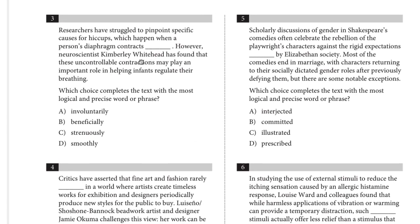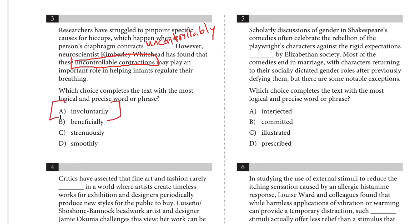Number three: researchers have struggled to pinpoint specific causes for hiccups, which happen when a person's diaphragm contracts in a certain way. However, this neuroscientist found that these uncontrollable contractions — and that's all we need. The muscle contracts uncontrollably, so the answer will be a close match: 'involuntarily.' If it's involuntary, there is no voluntary control. 'Smoothly' and 'beneficially' make no sense, and 'strenuously' might seem tempting but you want to think proactively about what kind of word needs to go in the blank.